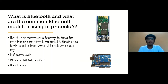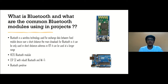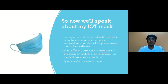So what is Bluetooth and what are the common Bluetooth modules used in projects? Bluetooth is a wireless technology used for exchanging data between fixed and mobile devices over a short range. The main drawback of Bluetooth is that it can only be used over short distances, whereas IoT can be used over a longer range. The common Bluetooth components are the HC05 Bluetooth module, ESP32 with inbuilt Bluetooth and Wi-Fi, and Bluetooth pen drives.